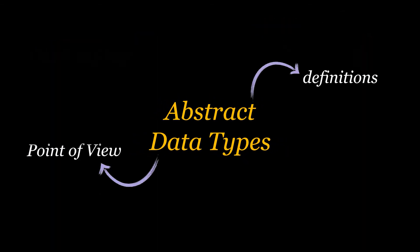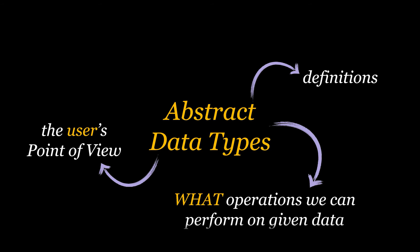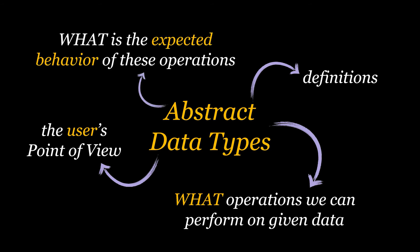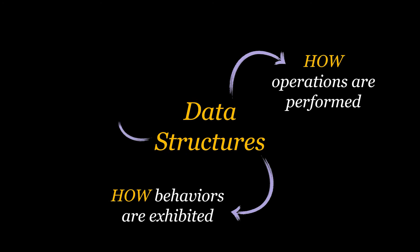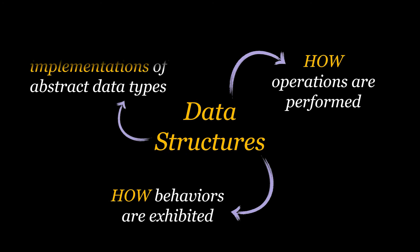So abstract data types are models, definitions, logical descriptions from the point of view of the user, where we define the operations we can perform on given data and what is the expected behavior of these operations. Data structures, on the other hand, specify how these operations will exhibit these behaviors. They are the concrete implementations of the abstract data types.